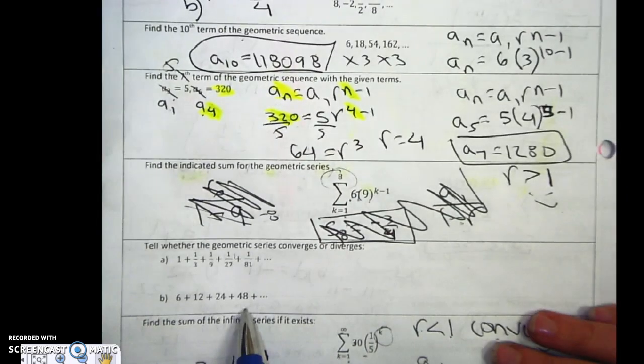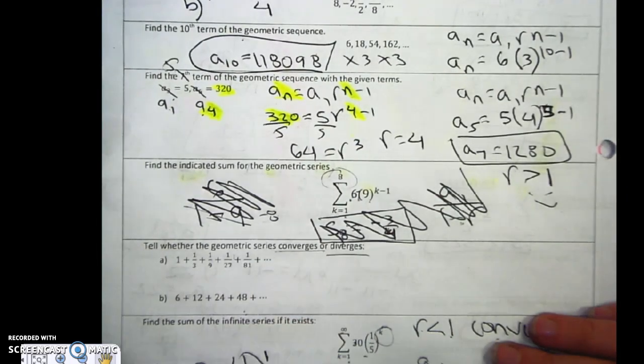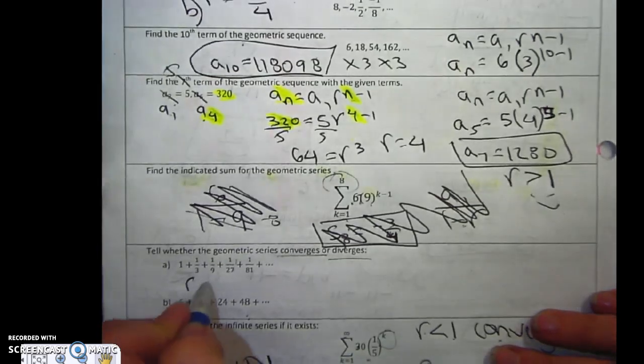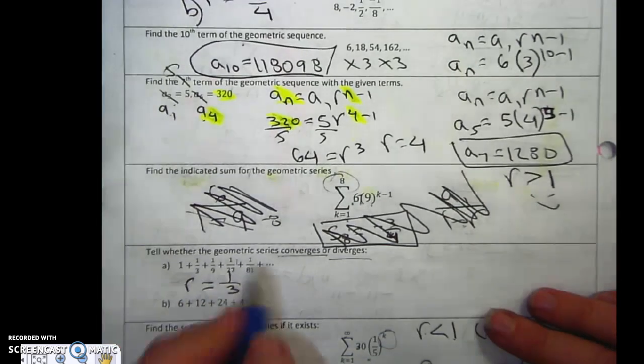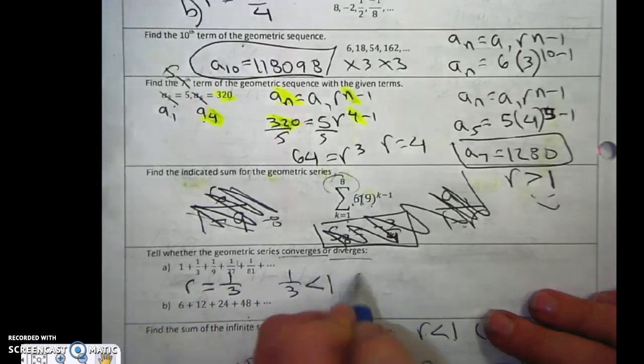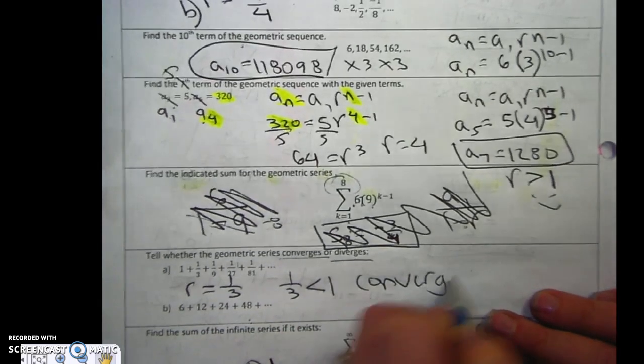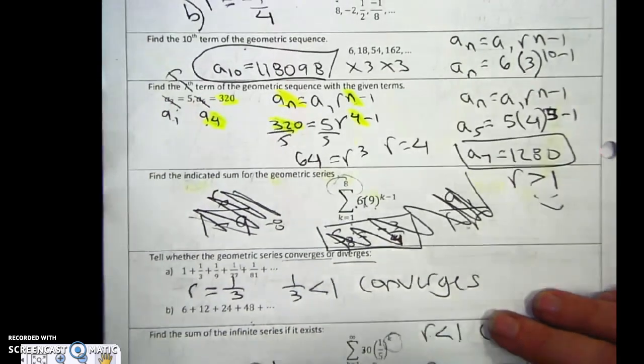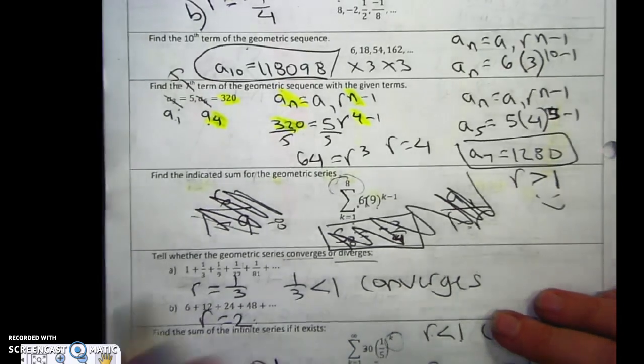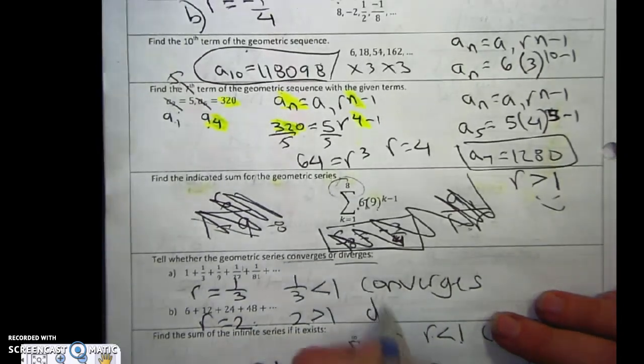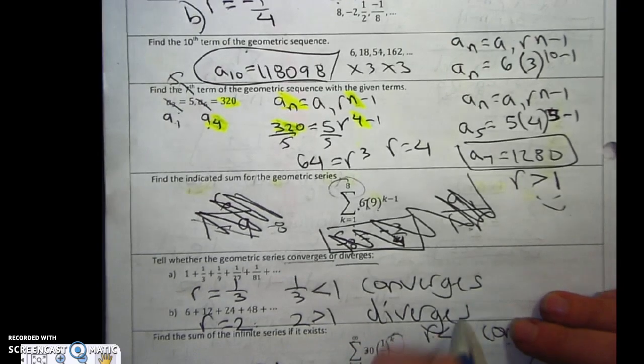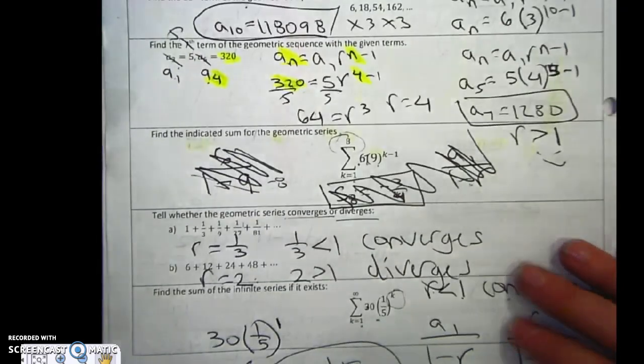You'll also get questions on there that I don't actually want you to find the answer. I want you to just tell me if it converges or diverges. So I need the ratio. The ratio here is 1 third. 1 third is less than 1. It converges. I can do it. This one, the ratio is 2. That is greater than 1. It diverges. There is no sum. And that's the test.